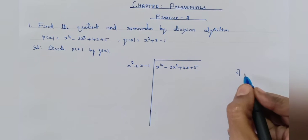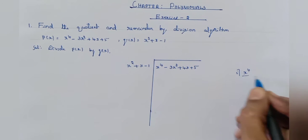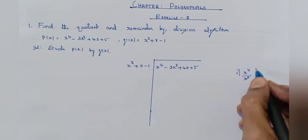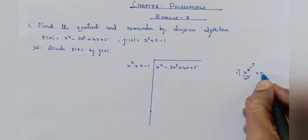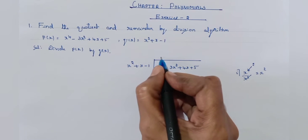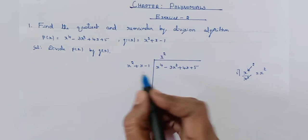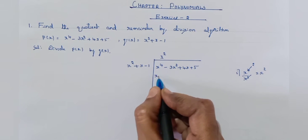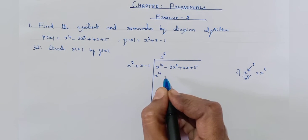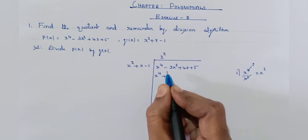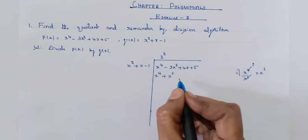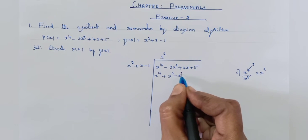Divide the first term of the dividend by the first term of the divisor. Cancel x square — x square is remaining. Write x square in the quotient place. Multiply the divisor by x square: x square into x square is x to the power of 4, plus x into x square is x cube, minus 1 into x square is minus x square.